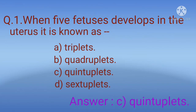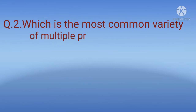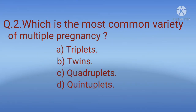To remember: two fetuses is twins, three fetuses is triplets, four fetuses is quadruplets, five fetuses is quintuplets, and six fetuses is sextuplets. Question 2: Which is the most common variety of multiple pregnancy? Options: A) Triplets, B) Twins, C) Quadruplets, D) Quintuplets.